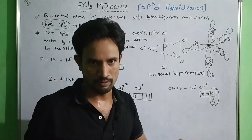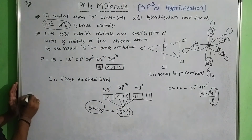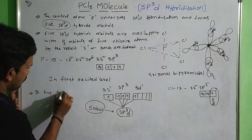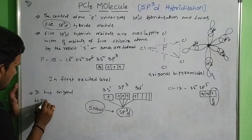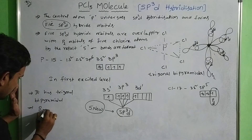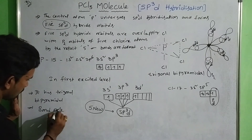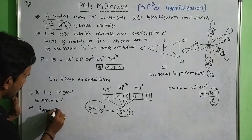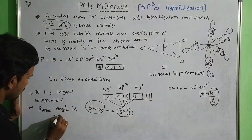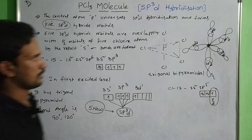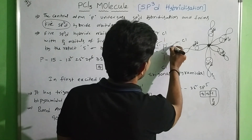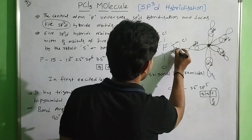That is the formation of PCL5. The shape of the molecule is trigonal bipyramidal, and the bond angle is 90 degrees and 120 degrees. 90 degrees indicates the axial bond angles and 120 degrees indicates the equatorial bond angles.